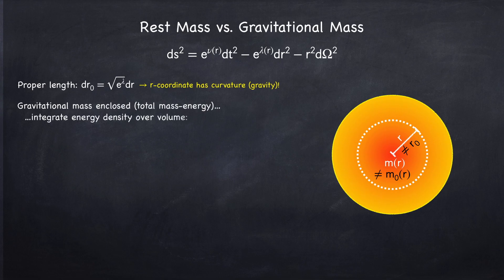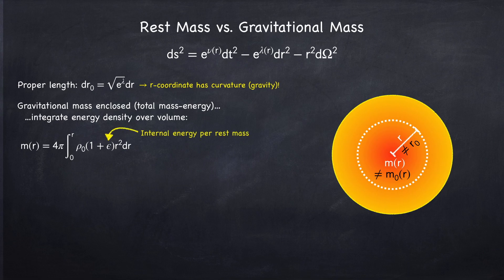The gravitational mass is defined as the total mass-energy content — mathematically, the energy density ε integrated over the coordinate volume, where ε accounts for internal energy. This is called the gravitational mass because it shows up in the metric, as we found in Stellar Physics 3C. It is the mass responsible for spacetime curvature and can be measured by looking at orbiting objects.